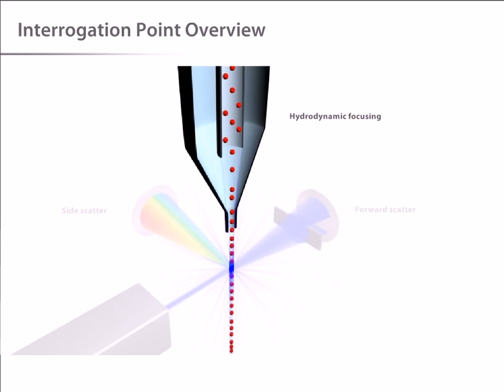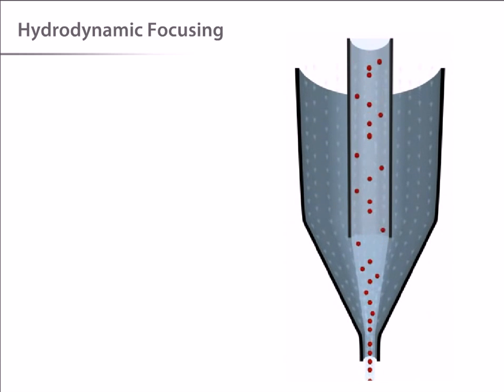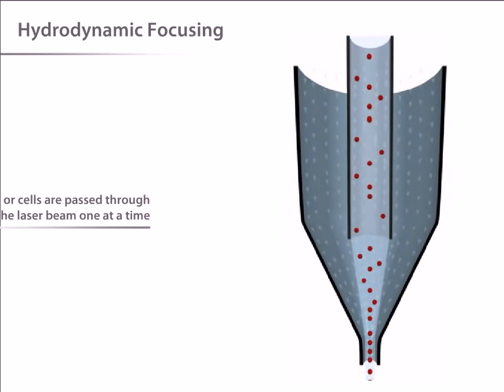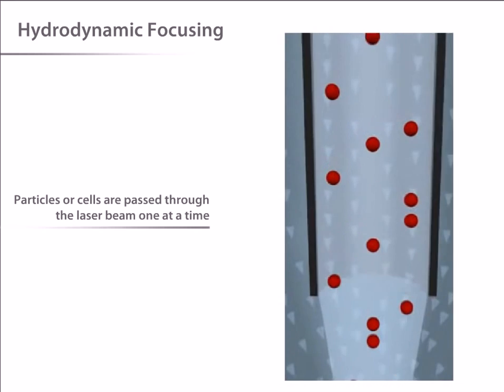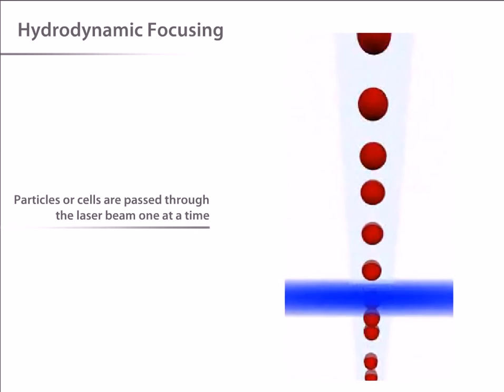First, let's talk about how the sample is delivered to the laser. Here we see how the sample is transported through the interrogation point. For accurate data collection, it is important that particles or cells are passed through the laser beam one at a time.